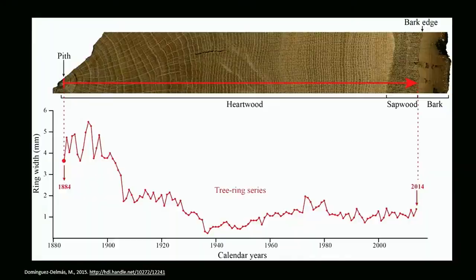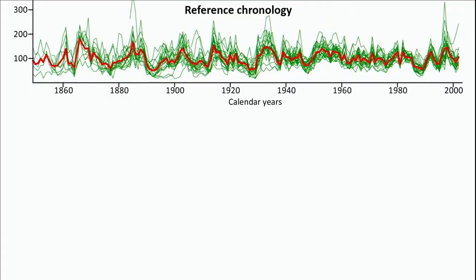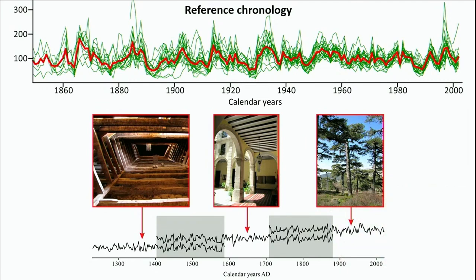We also find the provenance of the wood — whichever chronology provides the highest match, we consider that the area where the wood came from. To produce these reference chronologies, we sample lots of trees from the same area and same species, average them, and then expand them retrospectively by going to historic buildings made with wood from the same forest and species. That's how we extend our reference chronologies back in time.